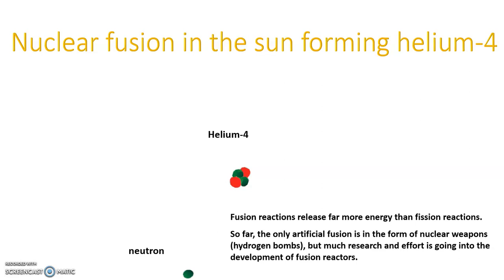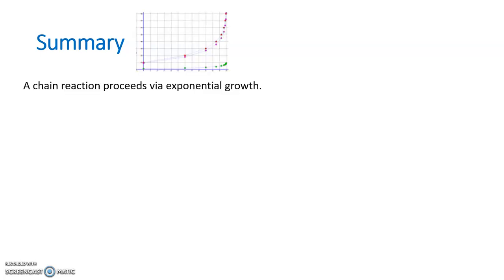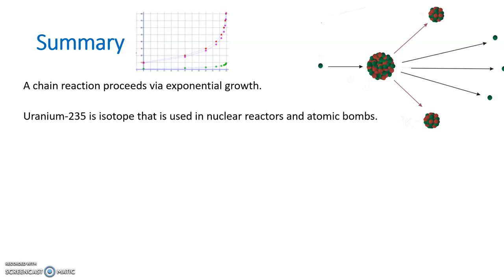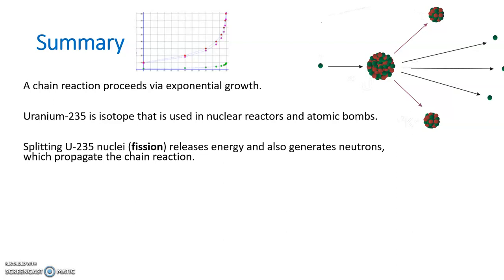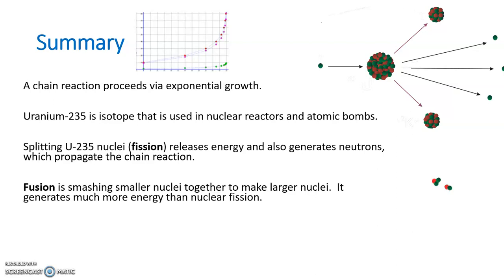To summarize, we'll start where we did at the beginning - a chain reaction proceeds via exponential growth and shows a pattern like that. Uranium-235 is the isotope that's used in nuclear reactors and atomic bombs. You can see this diagram here throwing out three neutrons instead of just two - usually it's two to three neutrons. Again, uranium-235 is the only isotope of uranium that does that, which is why it's a very good thing that it's very rare. It keeps people from getting their hands on it, which would be bad news. Because of those neutrons, it's the only one that propagates that chain reaction.